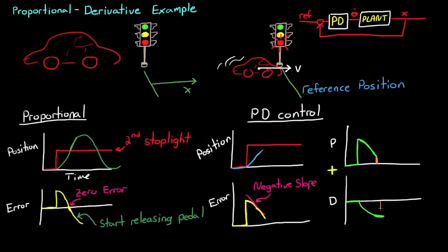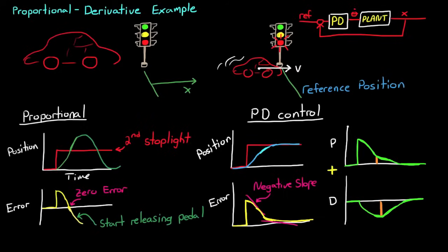And if you've tuned yourself properly, which loosely means that you know how to drive, then you're going to stop right at that second light. Now one way to think of the interaction between proportional and derivative is that the proportional path tries to get you to the destination as fast as possible, while the derivative part is trying to restrain you from moving too quickly. In this case it takes the balance of the two to properly stop at the light.